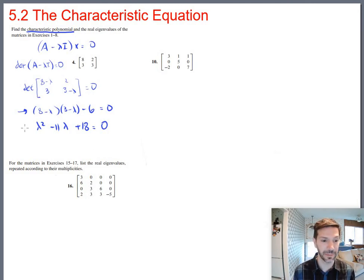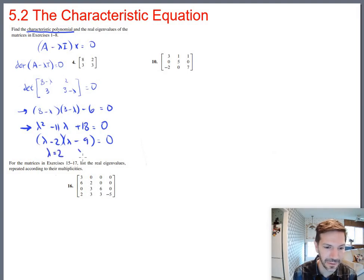And now, so that is the characteristic polynomial. We've answered part 1 of the question here. Solving the characteristic polynomial will give us the real eigenvalues. Feel free to use quadratic formula if you like, but if it's fairly easy to factor, that's not a bad way to go. This is minus 2 and minus 9. So eigenvalues of 2 and 9. And we are done. We have found the real eigenvalues and the characteristic polynomial.